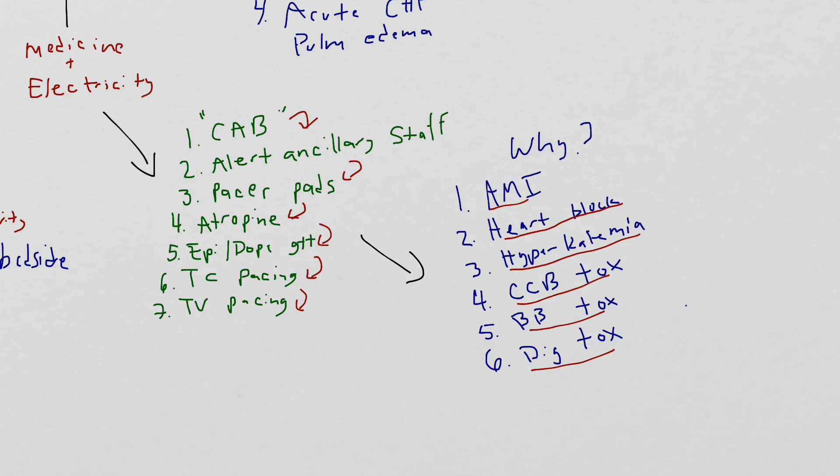And the reason you're doing this all at the same time is because you're always thinking that you are just there to bridge the patient to a definitive treatment. Starting these medications, the transcutaneous pacing, transvenous pacing is only a means to an end. And if you don't know what the underlying cause is, you may not be able to help the patient. And the patient may become unstable very quickly in the emergency room.